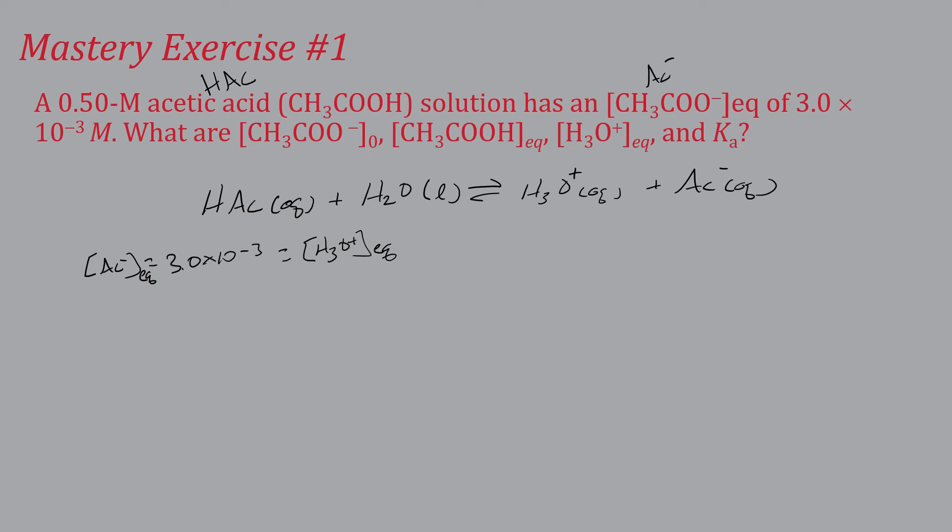So let's look at what the Ka is going to be for this. Ka is equal to the hydronium concentration times the acetate concentration divided by the acetic acid concentration. We already know two of these. The one thing we don't explicitly know is what the acetic acid concentration is, but we can figure that out because we know what the initial one is.